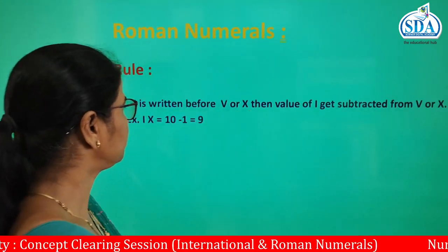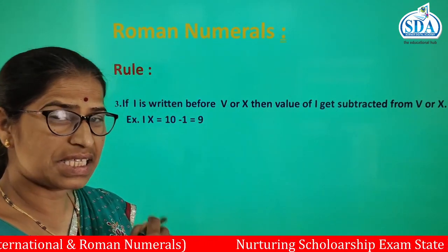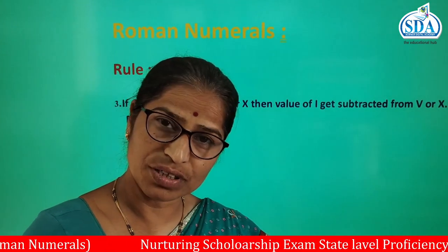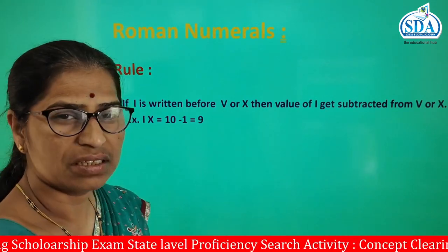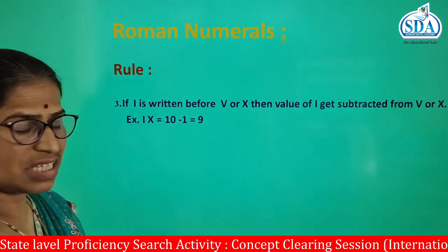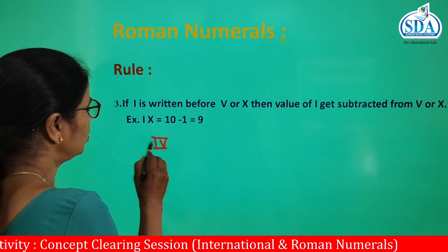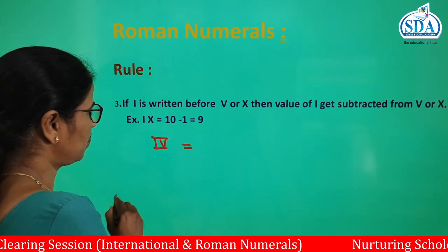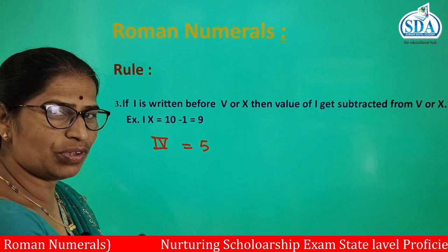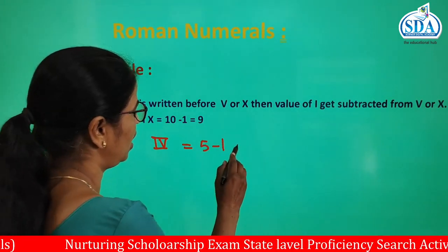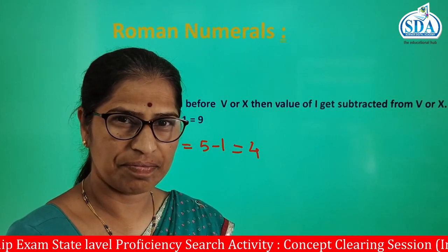Now the next rule: if I is written before V and X, then the value of I gets subtracted. For example, the value of V is 5, and I is placed before it; therefore subtract 1, and the value of this numeral is 4 in international numerals. Do you get it?